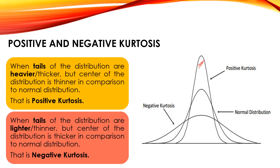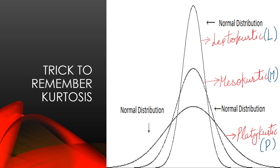When tails are lighter or thinner but center is thicker in comparison to normal distribution, that is negative kurtosis. So: center thinner than normal = positive kurtosis; center thicker than normal = negative kurtosis. A trick to remember: the thinner curve is leptokurtic, normal is mesokurtic, and the flat curve is platykurtic. Just remember LMP — alphabetical order: Leptokurtic, Mesokurtic, Platykurtic. Many students get confused between leptokurtic and platykurtic; the LMP order solves that.